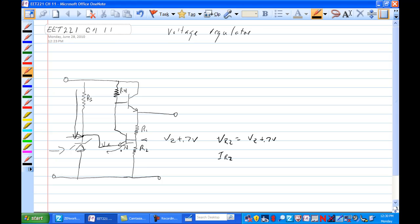I R2, by the way, is equal to I R1 is equal to V Zener plus 0.7 volts divided by R2. And that voltage, at this point, is set up by the Zener plus 0.7 volts.